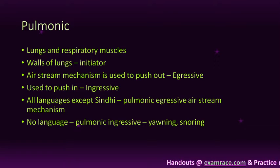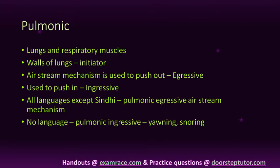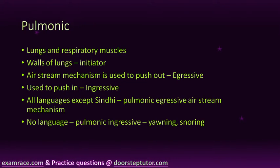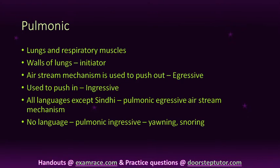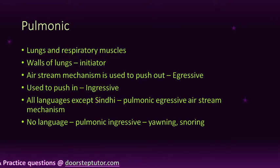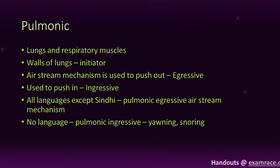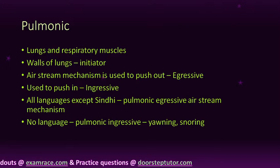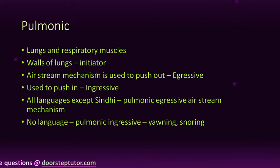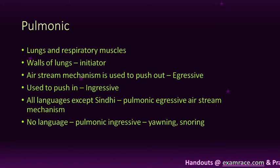The Pulmonic Airstream Mechanism consists of Lungs and the Respiratory Muscles. The walls of the lungs act as the initiator — they are moved by the respiratory muscles so that air is drawn into the lungs or pushed out of them. When the airstream mechanism is used to push air out, it is called Egressive; and when it is used to draw air in, it is Ingressive. So there are two: Pulmonic Egressive and Pulmonic Ingressive Airstream Mechanisms. Pulmonic Egressive pushes the air out, while Pulmonic Ingressive draws air in.